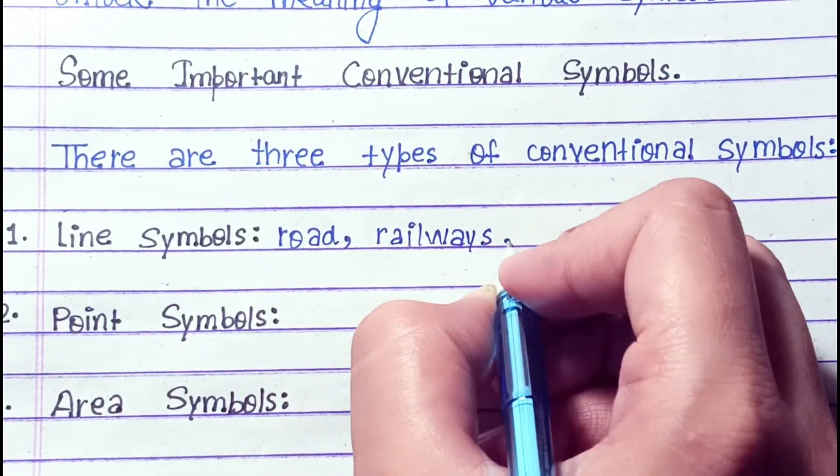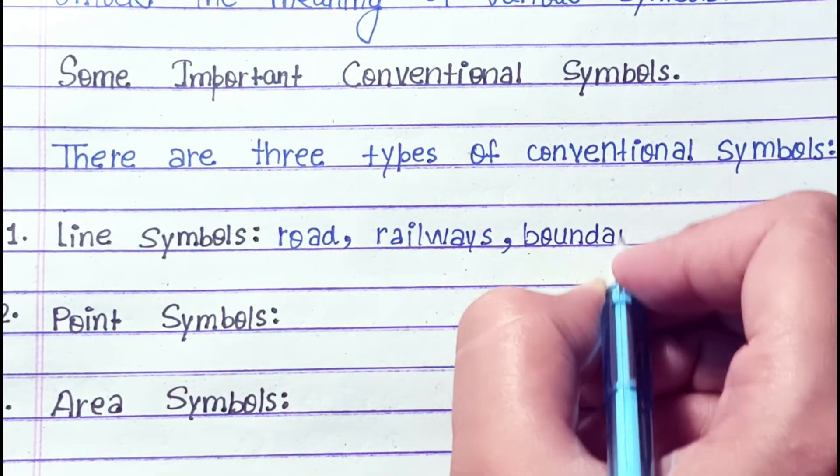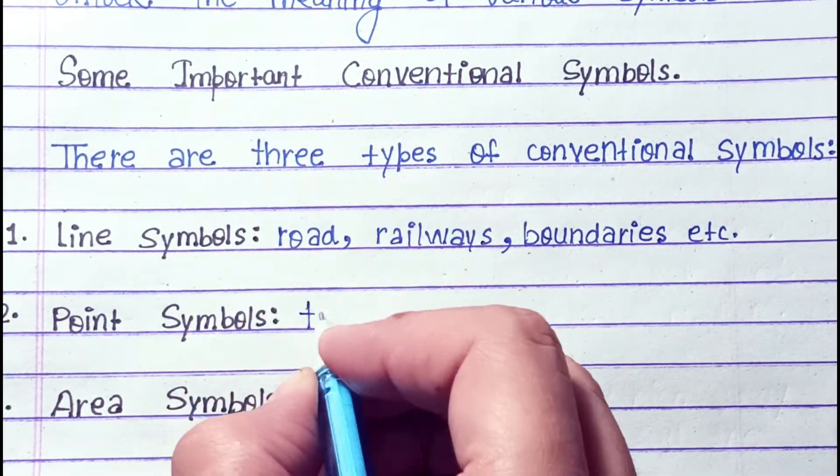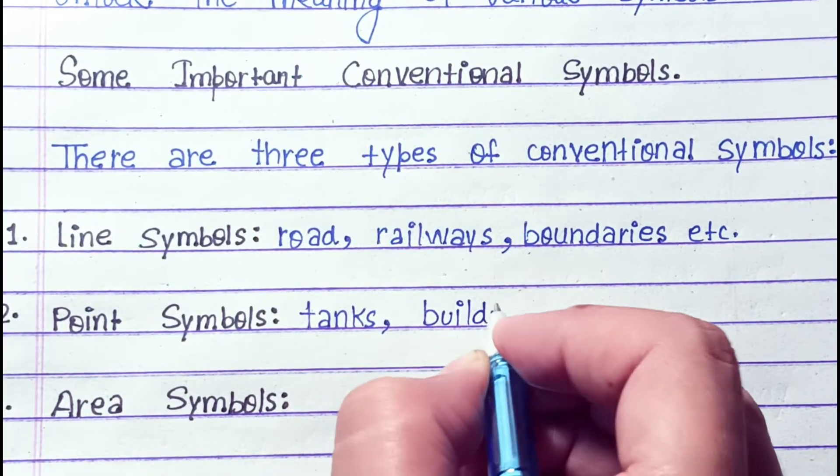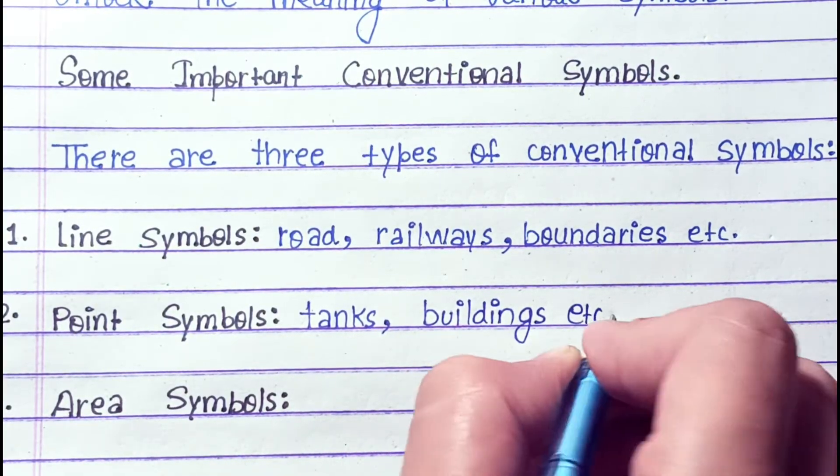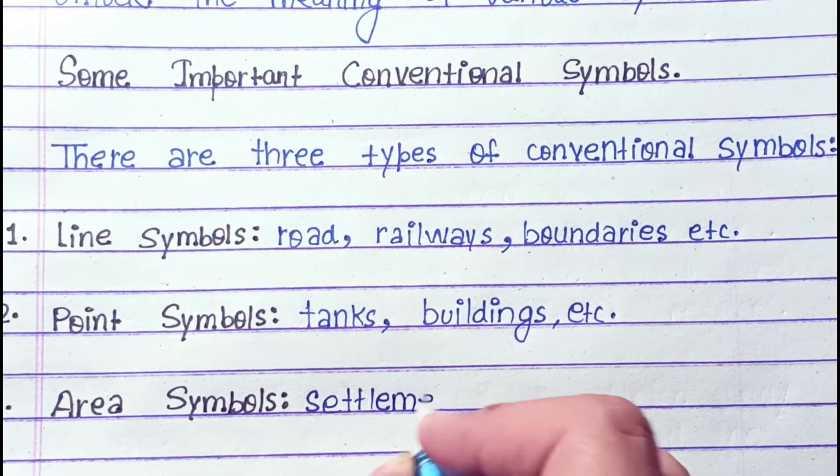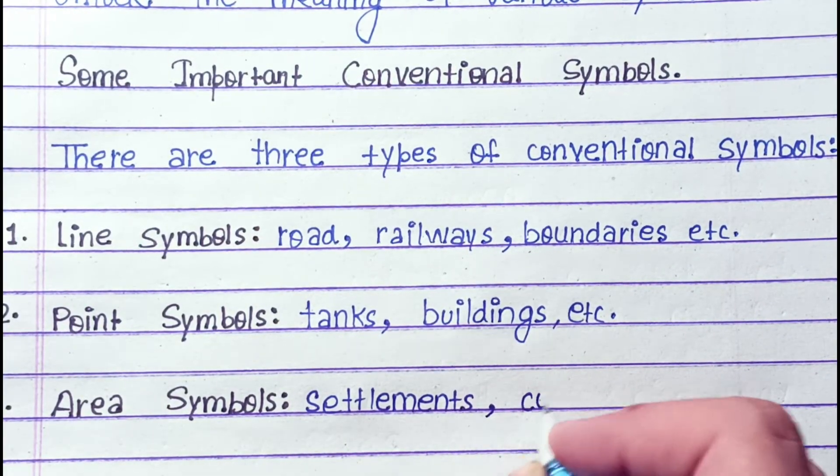There are three types of conventional symbols: line symbols, point symbols, and area symbols. Line symbols include roads, railways, boundaries, etc. Point symbols are for towns, buildings, etc. Area symbols are for settlements, cultivation, etc.